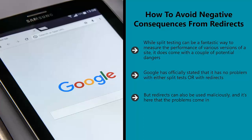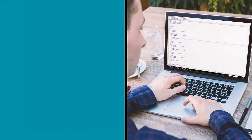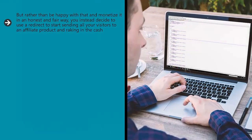Cloaking is a technique used by some developers in order to effectively trick users into going to a different page. For example, you might create a website that provides free, valuable fitness information. Over time, you build that site to be highly successful and you begin to rank in the top for 'how to lose weight.' But rather than monetize it in an honest and fair way, you instead decide to use a redirect to start sending all your visitors to an affiliate product and raking in the cash. It's an obvious strategy, but one that Google can have a hard time spotting if you use a PHP redirect.